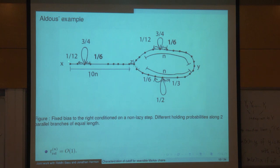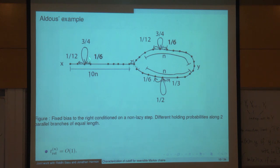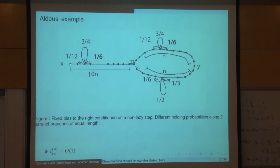Unfortunately, the product condition alone isn't enough. Here is the Aldous example: in one part of the graph, you're just walking to the right. You walk to the right with probability 1/6, to the left with probability 1/12, and mostly you stay in place. So you drift to the right with a positive speed, taking on average 120N steps to traverse this part.